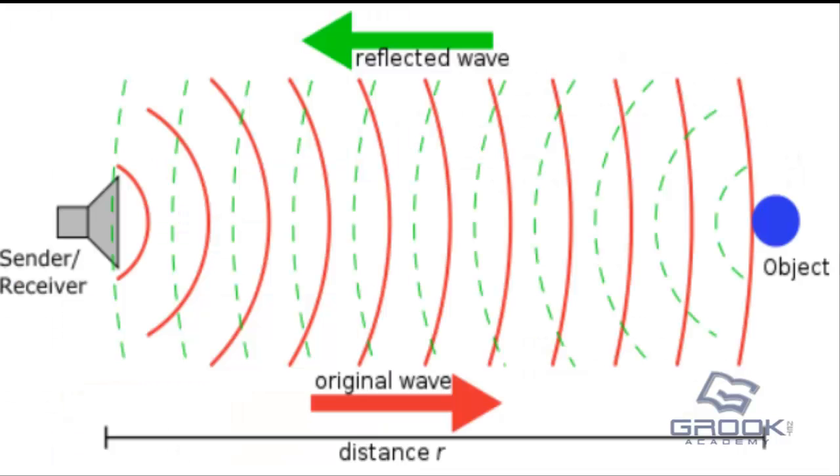The basic principle of work is by using input-output trigger for at least 10 microseconds high-level signal. Then the module automatically sends 840 kHz and detects whether there is a pulse signal back.